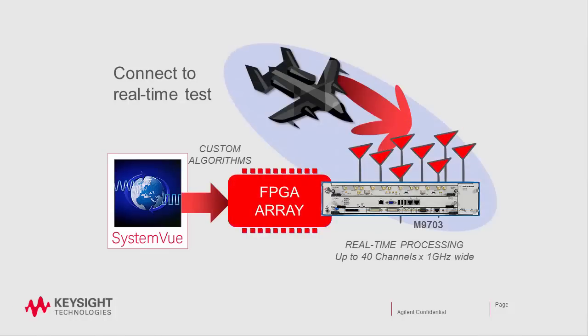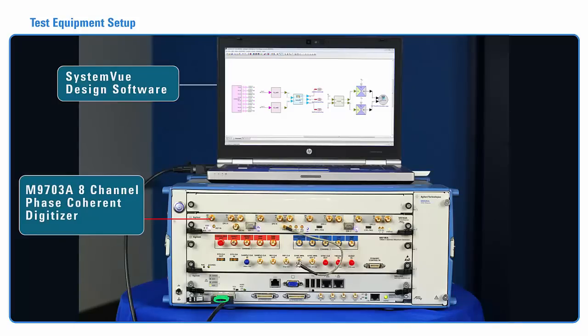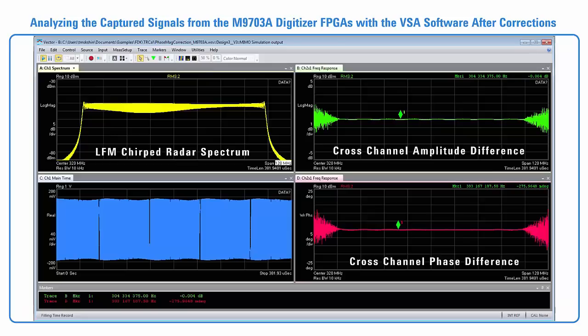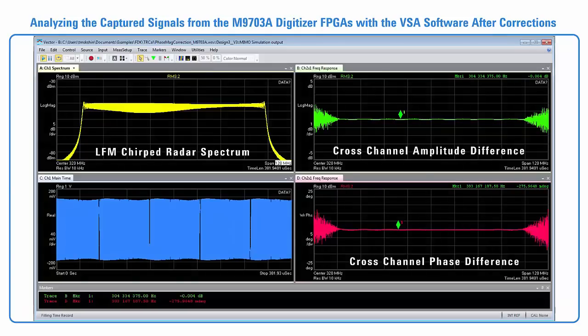SystemView can also program the FPGAs of certain real-time test instruments such as this M9703A multi-channel digitizer. The application shown here enables beam steering as well as real-time flatness correction in the instrument, then brings the measurement data back into SystemView for further processing, thus enabling custom hardware-in-the-loop applications.